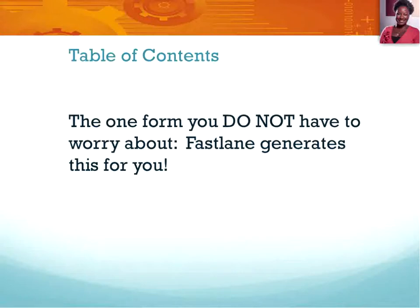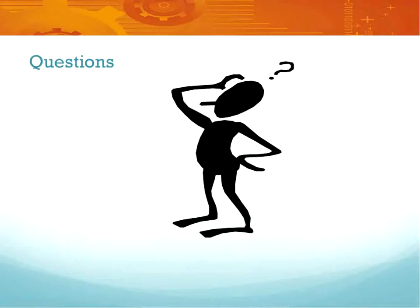Finally, the table of contents form — this is a bit of a freebie. Fastlane automates this portion of the proposal, so there is nothing you have to do here. Up until now we have covered a reasonable amount of preliminary forms information. We know you are burning to ask some great questions, so please feel free to enter your questions into the chat box.